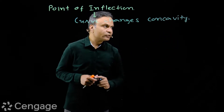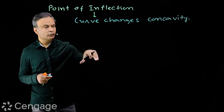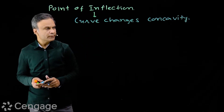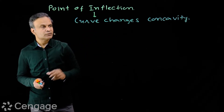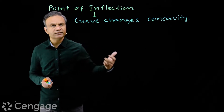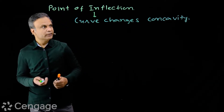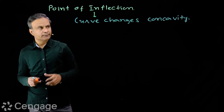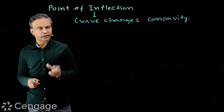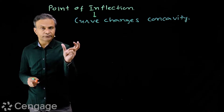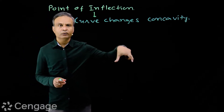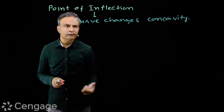Change in concavity means from downward to upward or from upward to downward. That means this is the point where the second derivative changes its sign. We know that the graph is concave upward if the second derivative is positive, and concave downward if the second derivative is negative.